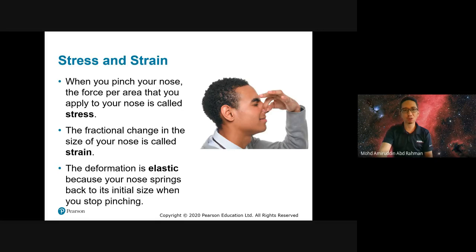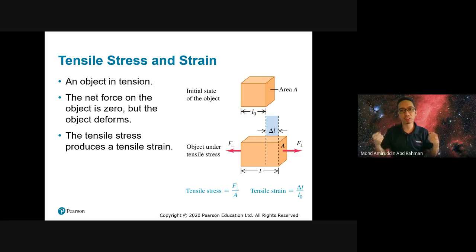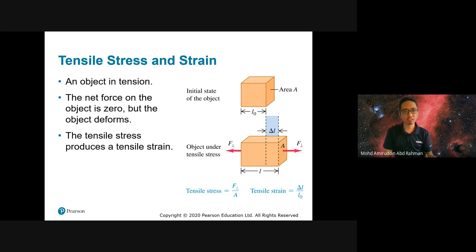An object under tension has a net force of zero, but the object deforms. If the object is elastic, you can apply force and the object deforms — tensile stress produces tensile strain. So the concepts of stress and strain go together: when we have a stress, we also have a strain. Stress is calculated as the total force divided by the area over which the force is applied — note that it is the area, not the volume.